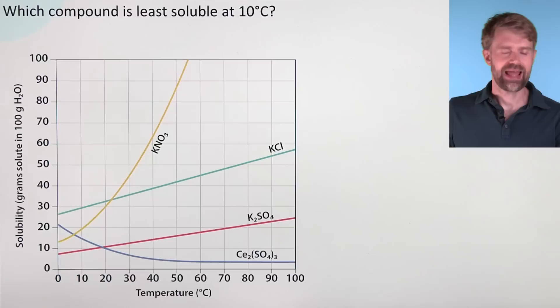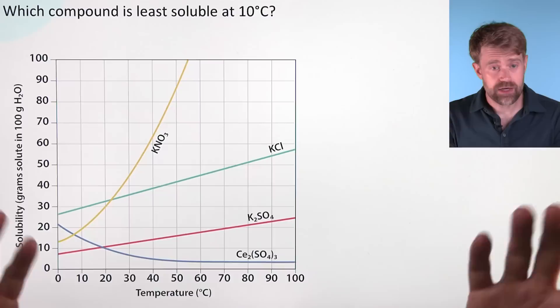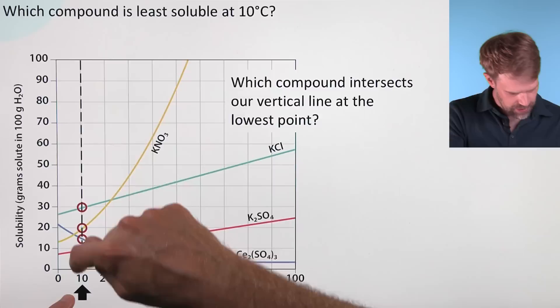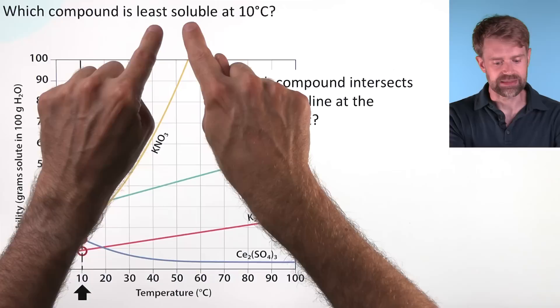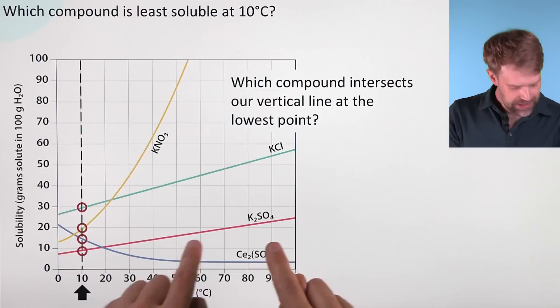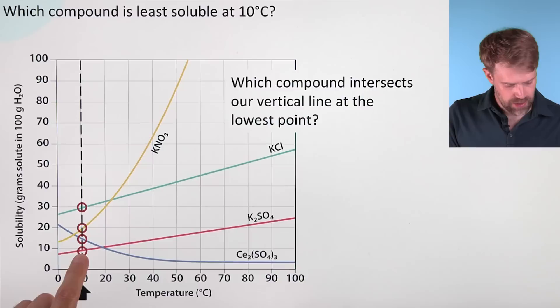We can ask a similar problem, but flipped around. Which compound is least soluble at 10 degrees Celsius? We do the same thing: 10 degrees Celsius on the x-axis, draw a vertical line up, and get four intersection points. Since we're looking for the least soluble compound, we ask which of these lines intersects at the lowest point, and it looks like it's going to be this pink line here, which is K2SO4 (potassium sulfate). And there's our answer.